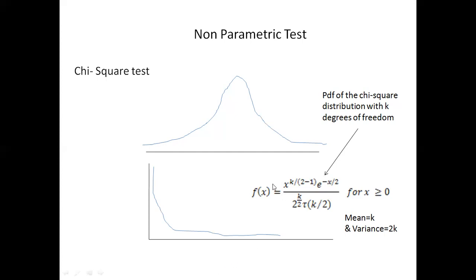If you square the values of the normal distribution, you can have the chi-square distribution with one degree of freedom. If z1, z2, ... zk are independent standard normal random variables, then z1 squared plus z2 squared plus ... plus zk squared has chi-square distribution with k degrees of freedom.